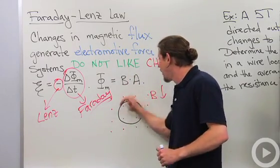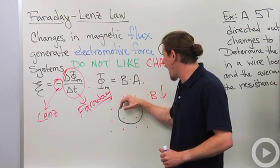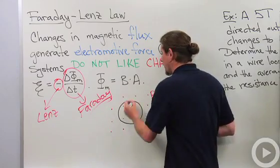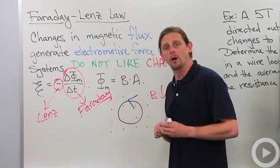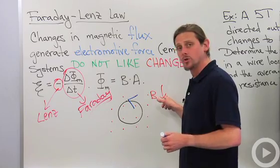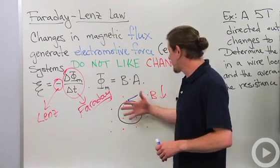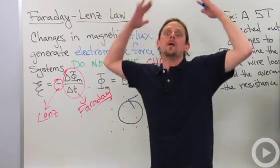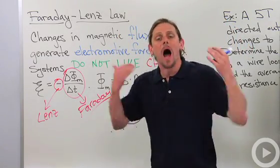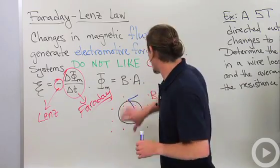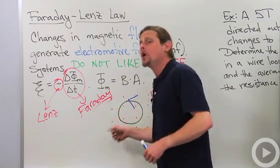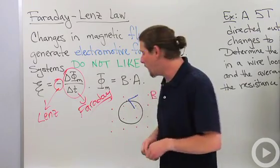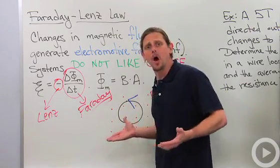And it's going to generate a current in such a direction that the magnetic field generated from the current is out of the board. So it's going to generate a current in that direction if the magnetic field goes down. What if the magnetic field coming out of the board started to increase? Well, now we've got more magnetic flux, but I don't want change. So now the current is going to go in the other direction so that the magnetic field opposes that increase in magnetic flux.